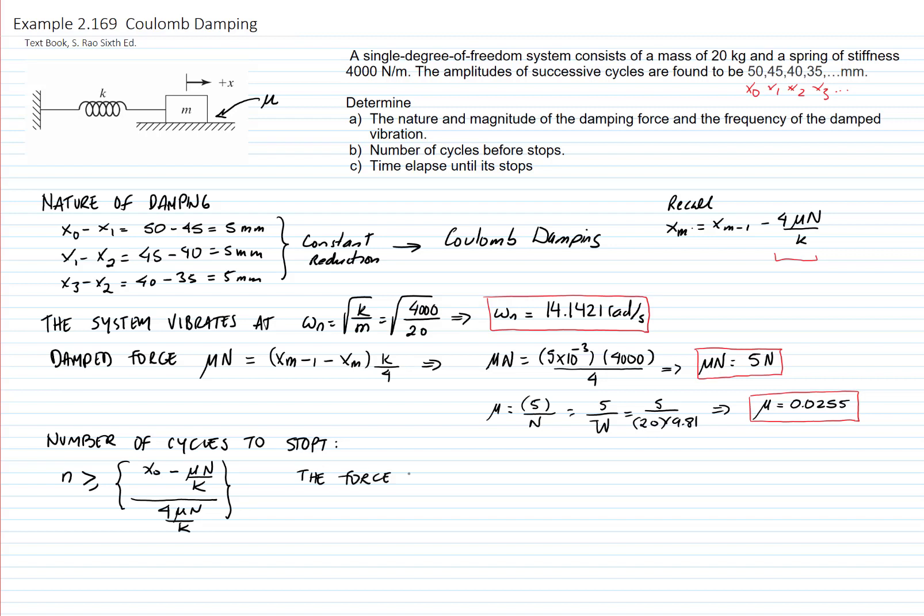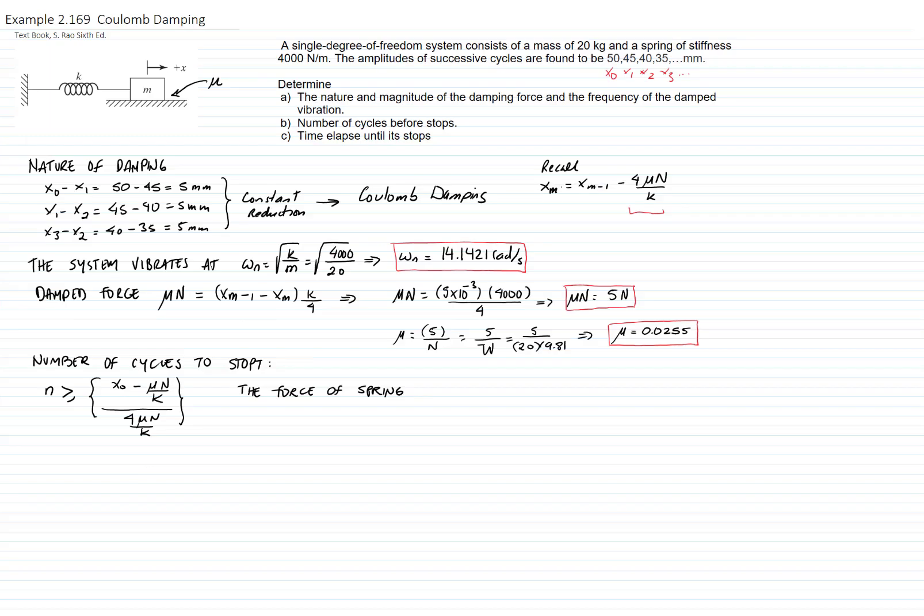This formula comes from that the force of the spring has to be bigger than mu times n in order to overcome that force. So we can say when the displacement is less than mu times n over k, the system stops.